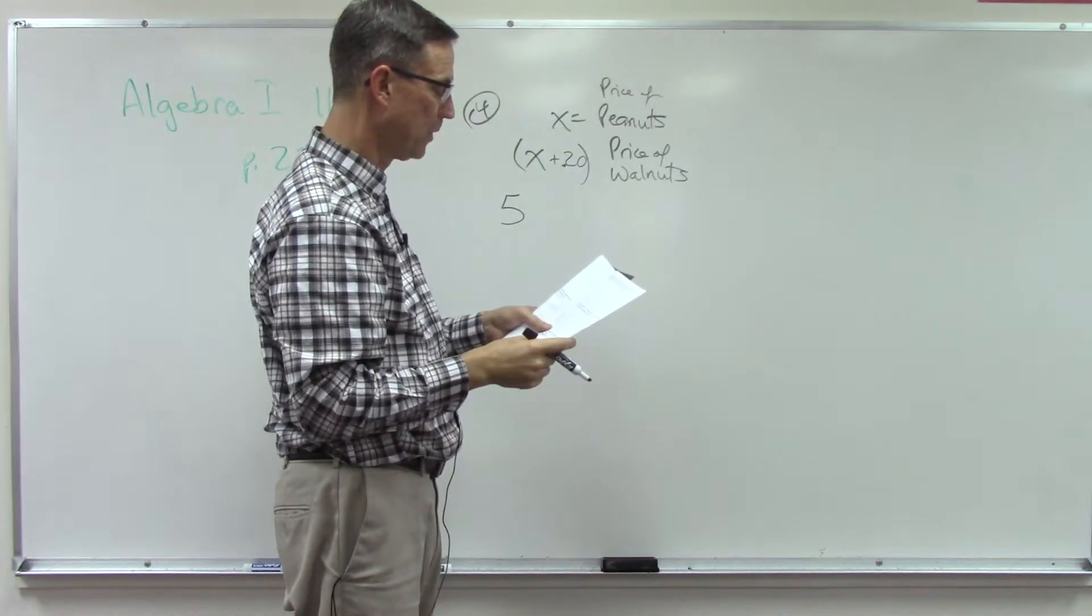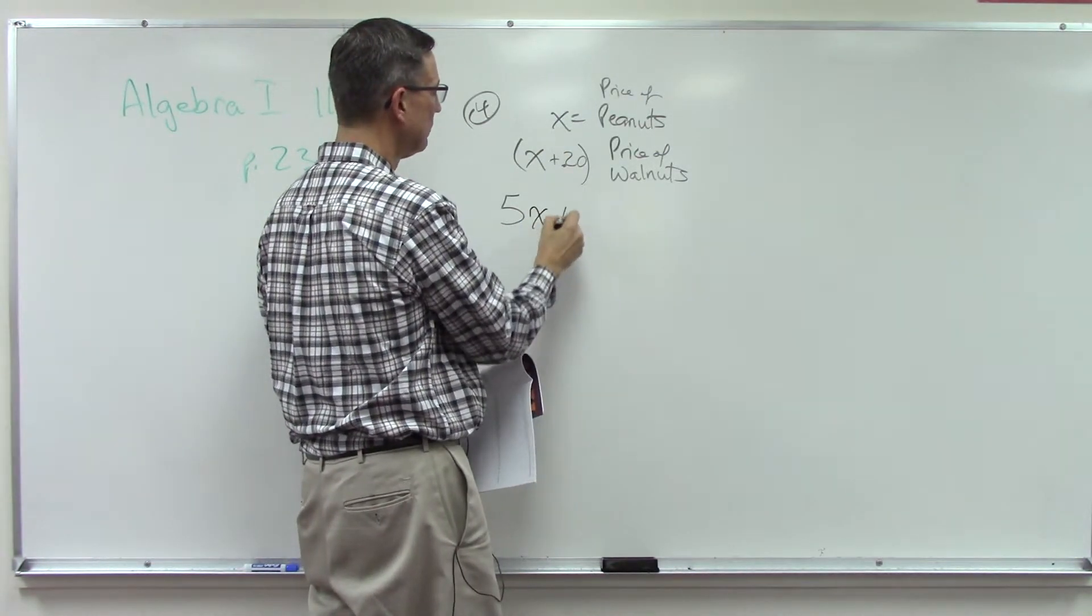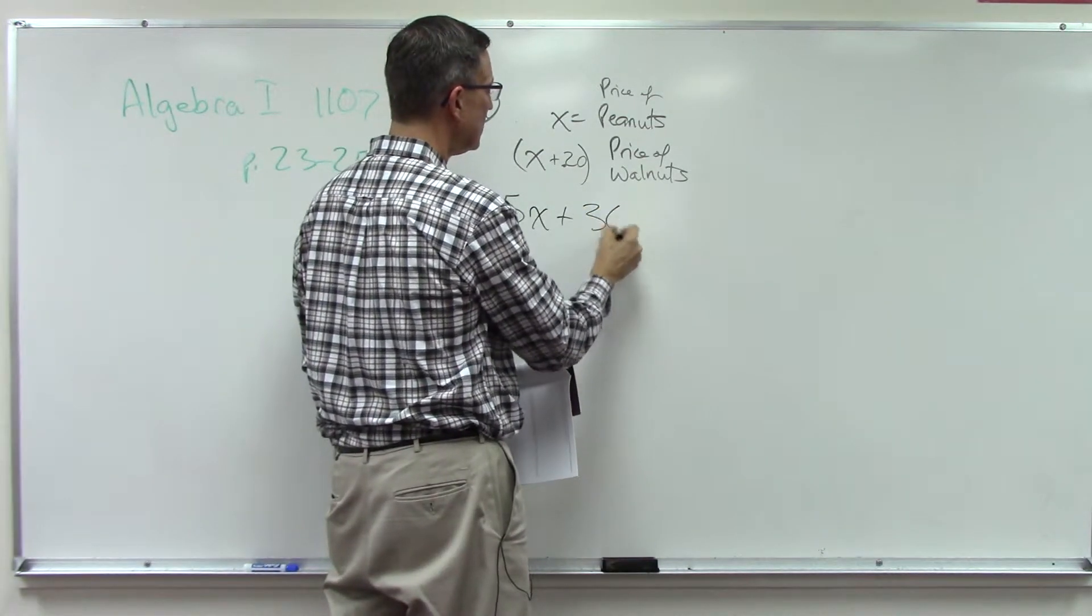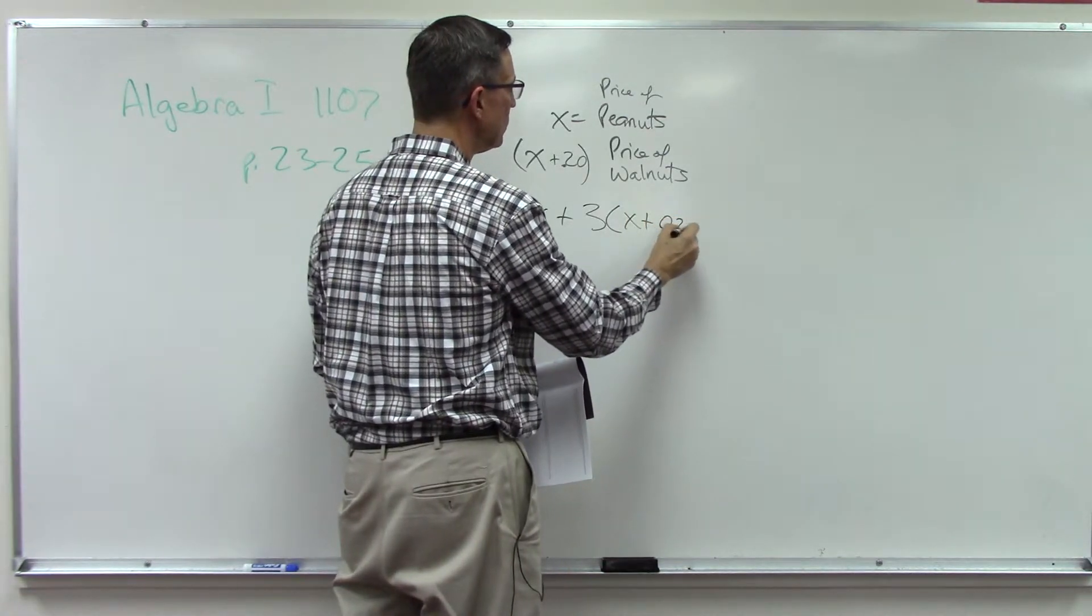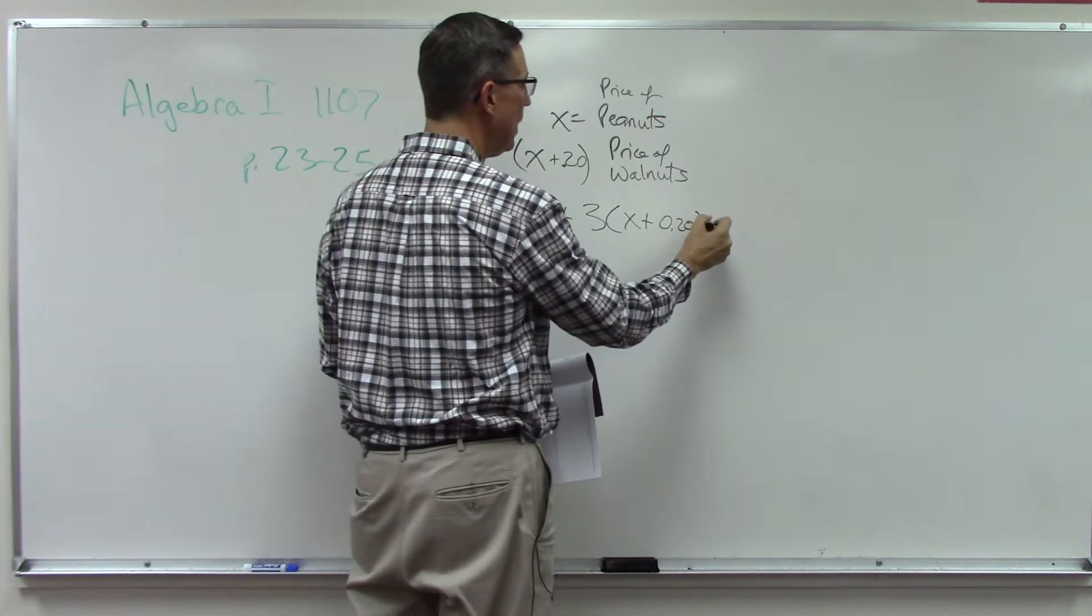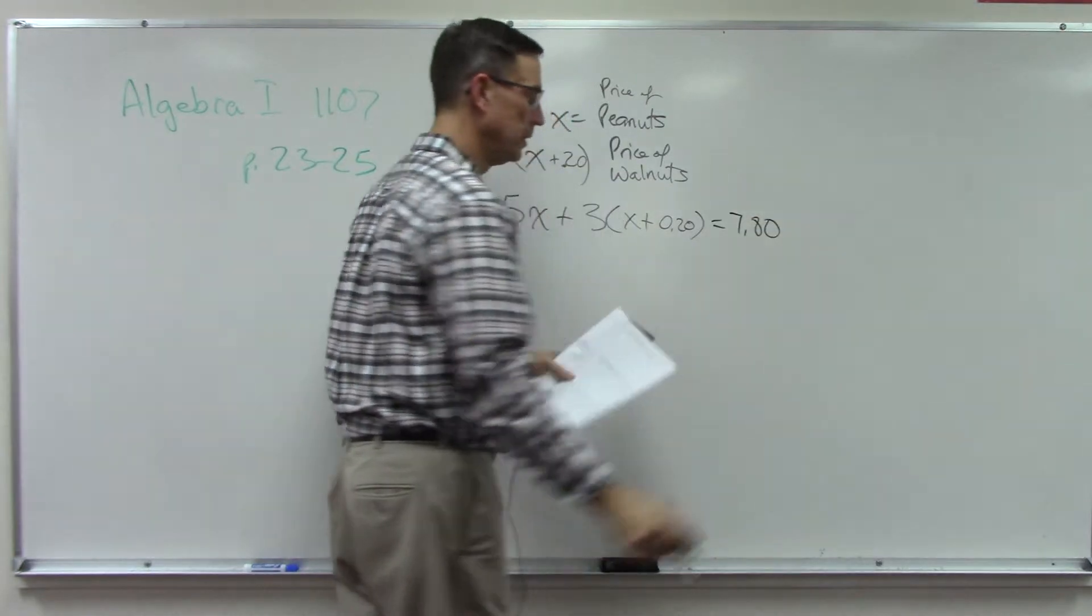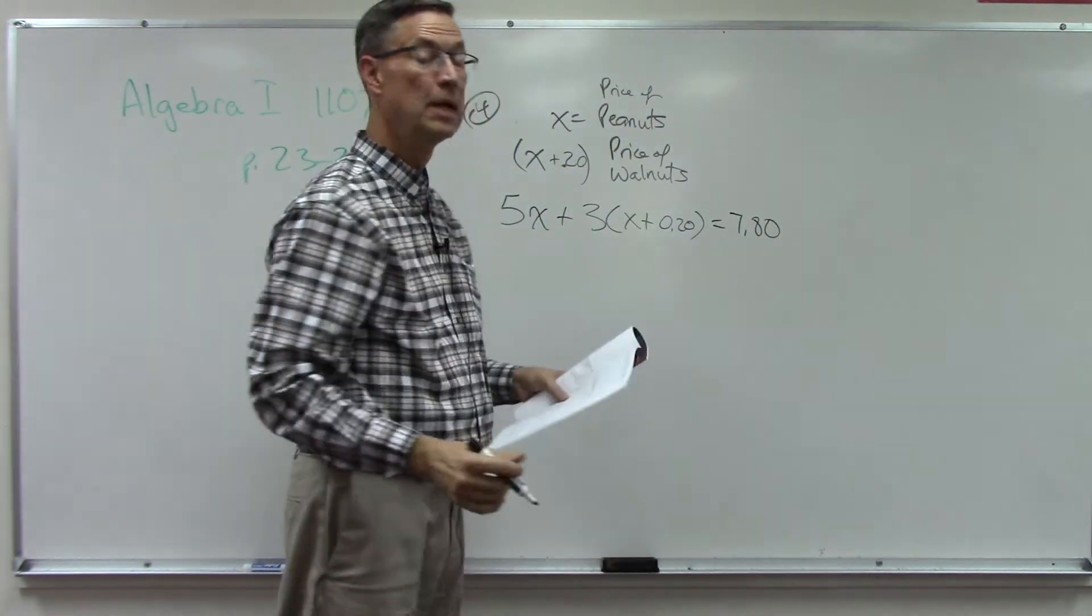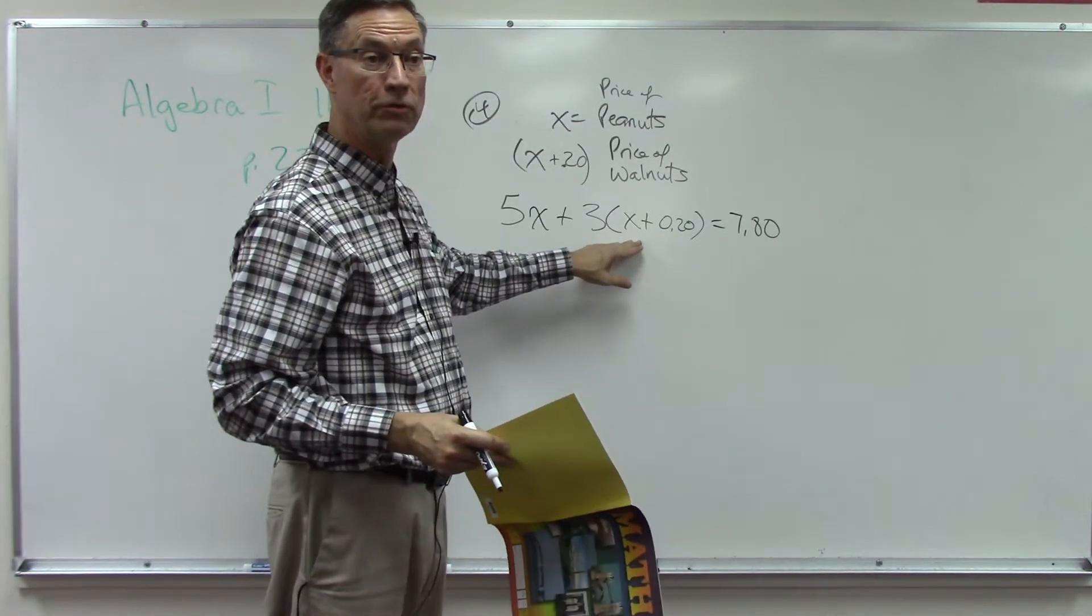Then we can multiply five times x plus three kilograms of the walnuts times the price for the walnuts, which is 0.20 cents more than the price of the peanuts. And now that equals the total paid, which was seven dollars and eighty cents. From there you can just solve and get the value for x, and then add 20 cents to that and you have the price for the walnuts.